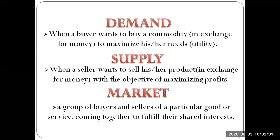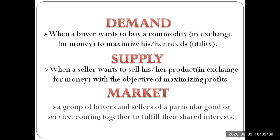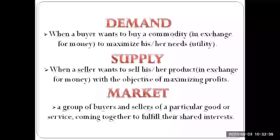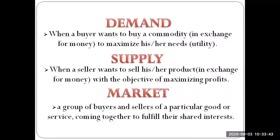The third term is the market, which is essentially a group of buyers and sellers of a particular good or service. Both the buyer and the seller come together into the market to fulfill their shared interests — the buyer wants to buy the commodity to maximize utility, and the seller wants to sell the product to maximize their own profits.